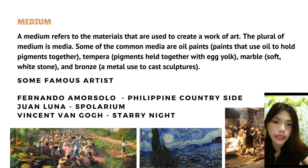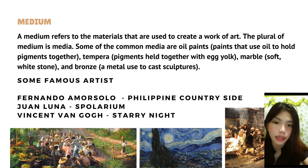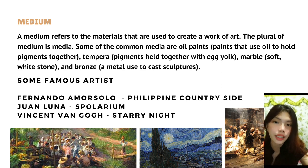What do artists use to translate their feelings into a beautiful reality? That is called medium. A medium refers to the materials used to create a work of art. The plural of medium is media. Some common media are oil paints, tempera, and marble. Some famous artists and their artworks include Fernando Amorsolo's Philippine Countryside, Juan Luna's Spolarium, and Vincent Van Gogh's Starry Night.